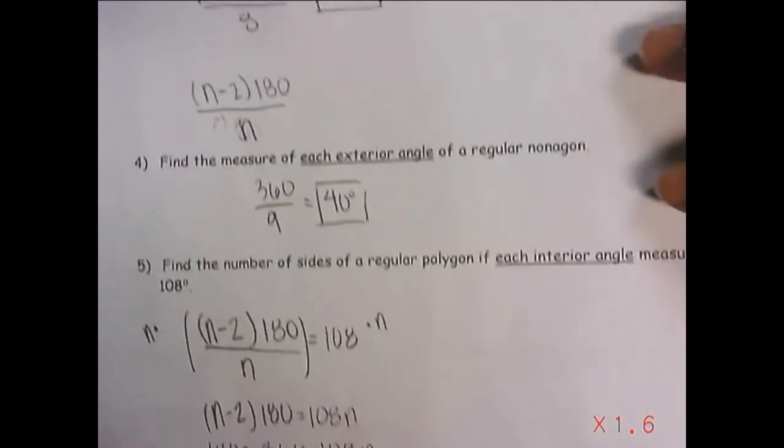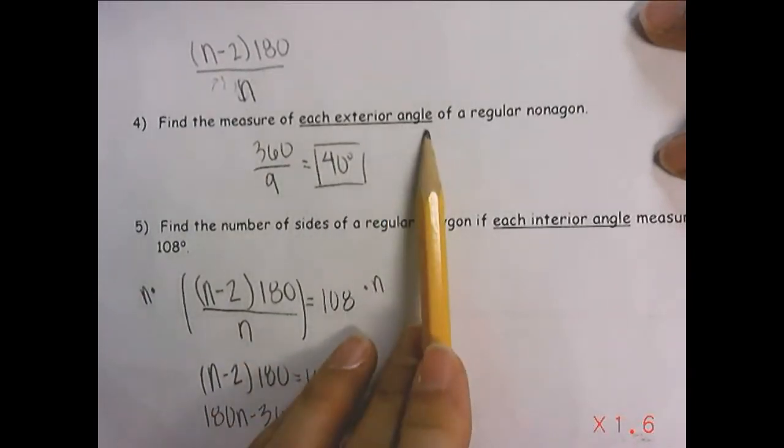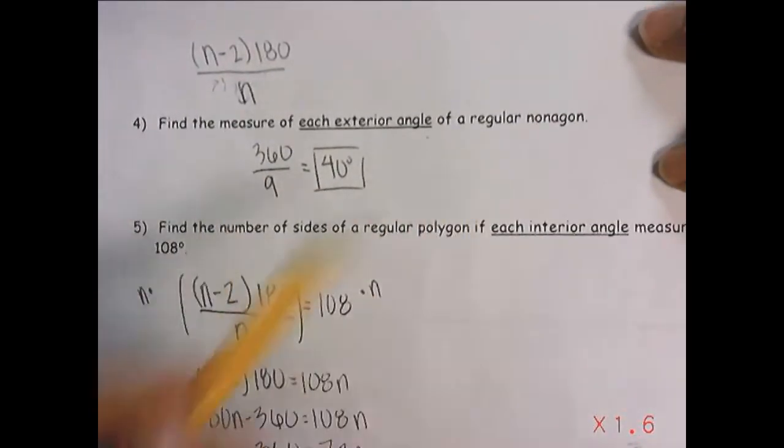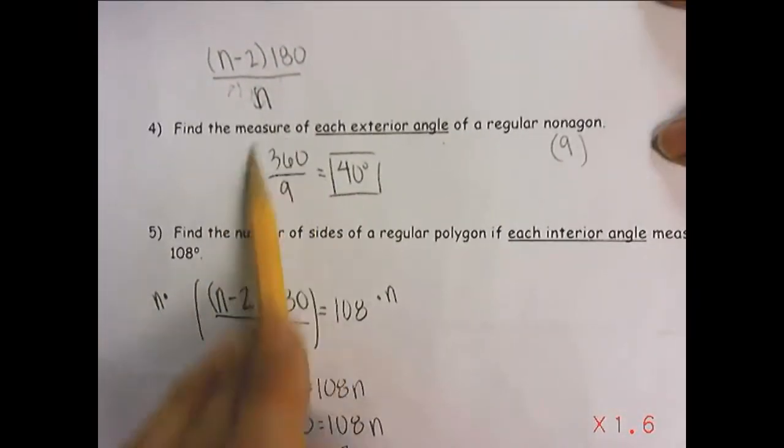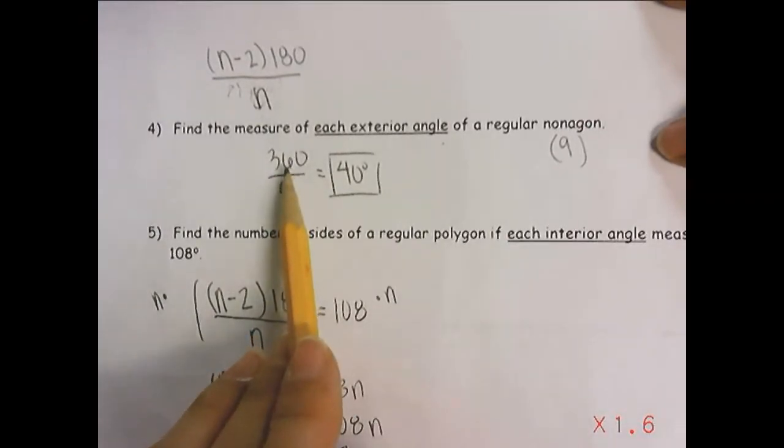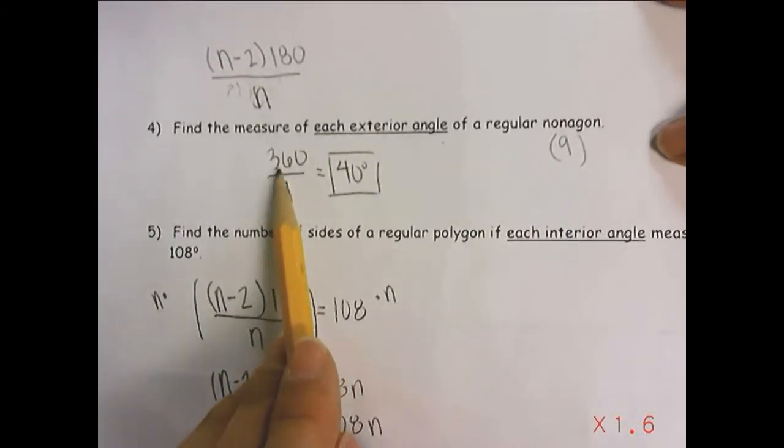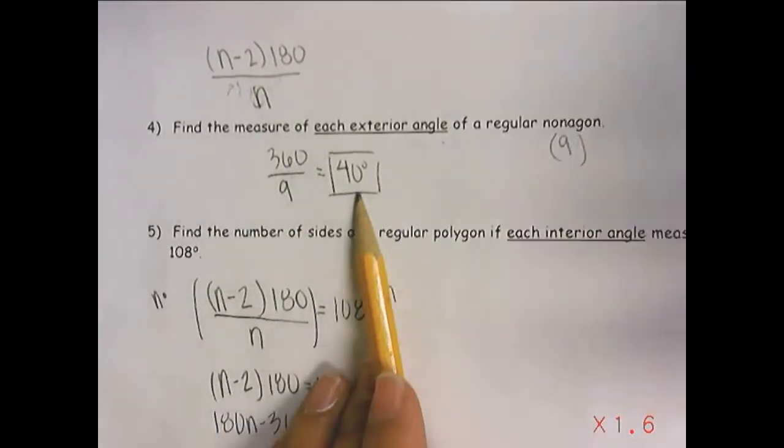Moving on to number four. Find the measure of each exterior angle of a regular nonagon. That's nine sides. So exterior angles, they always are 360 when you add them all up. The sum of them is 360, always, even if it has two billion sides. So we're going to take those exterior angles, 360, and divide it by nine, because there's nine sides, and that's where we get the 40 degrees.